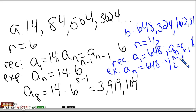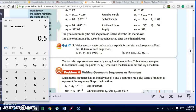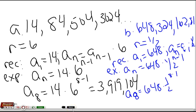They want the 8th value, so I'm going to plug in 8. So a sub 8 equals 648 times one half to the 8 minus 1, which is 0.5 to the 7th power times 648, and I get 5.0625.